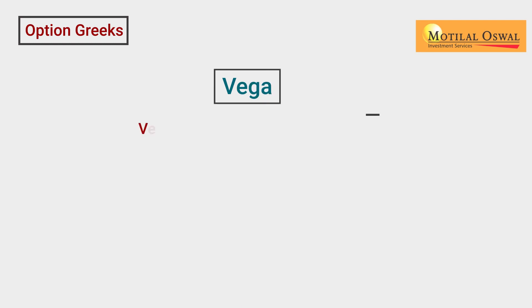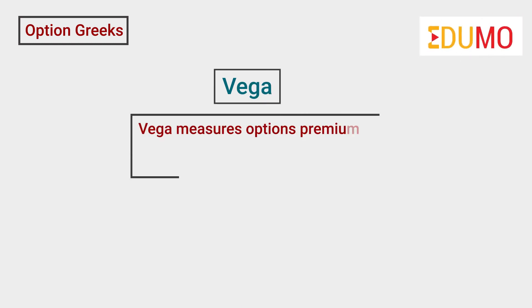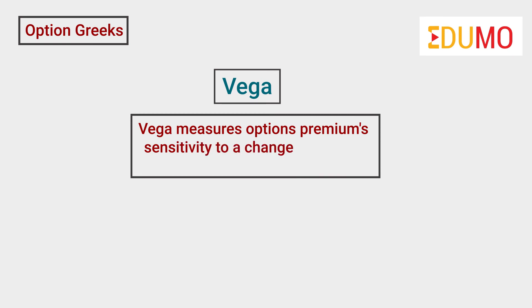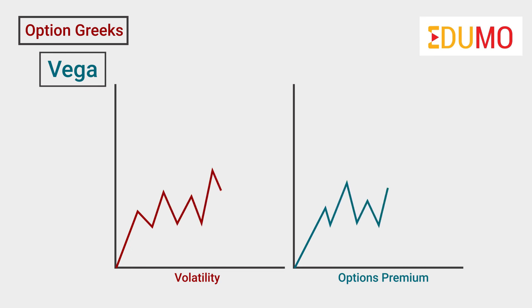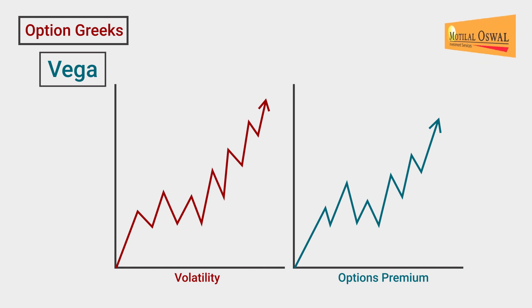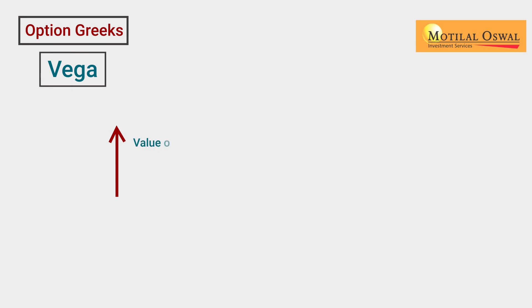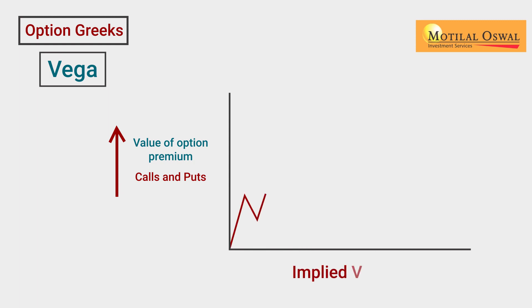Next is Vega. This Greek measures an option's premium sensitivity to a change in implied volatility. If there is a one-unit change in the expected volatility, how much will the options premium change, keeping other things constant, is measured by the Vega. There will be an increase in the value of an options premium, both in calls and puts, with a rise in implied volatility.